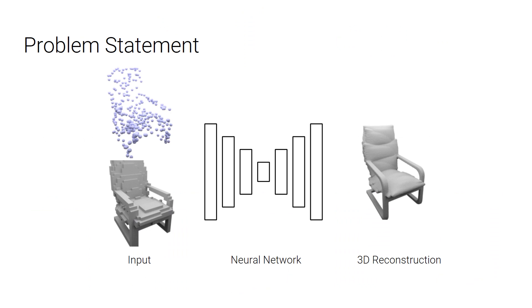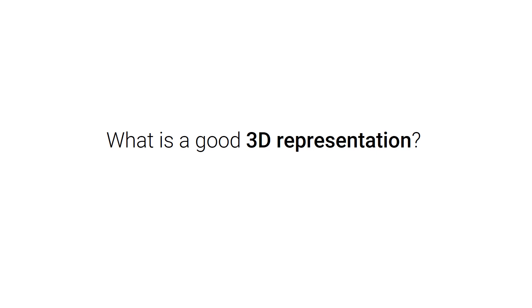We consider the following problem setting in this project. The input is either a noisy and sparse point cloud, or coarse voxelization of a shape. The neural network tries to predict the 3D shape given the inputs. Now we want to ask, what is a good 3D output representation so it can be easily predicted by a neural network?